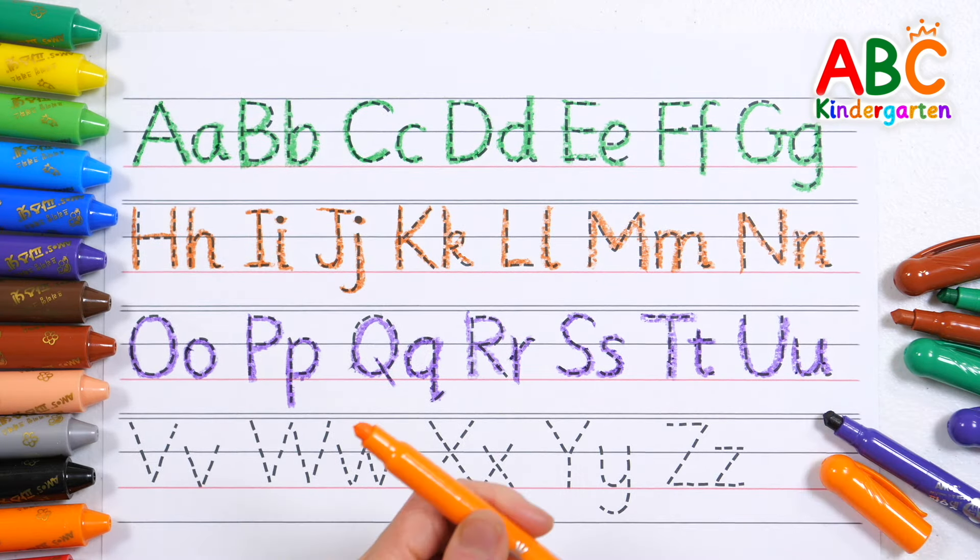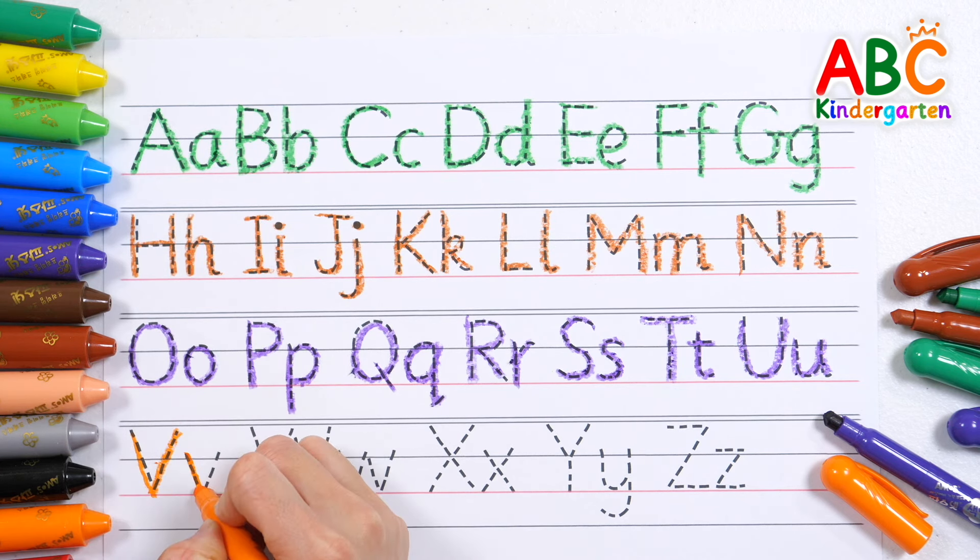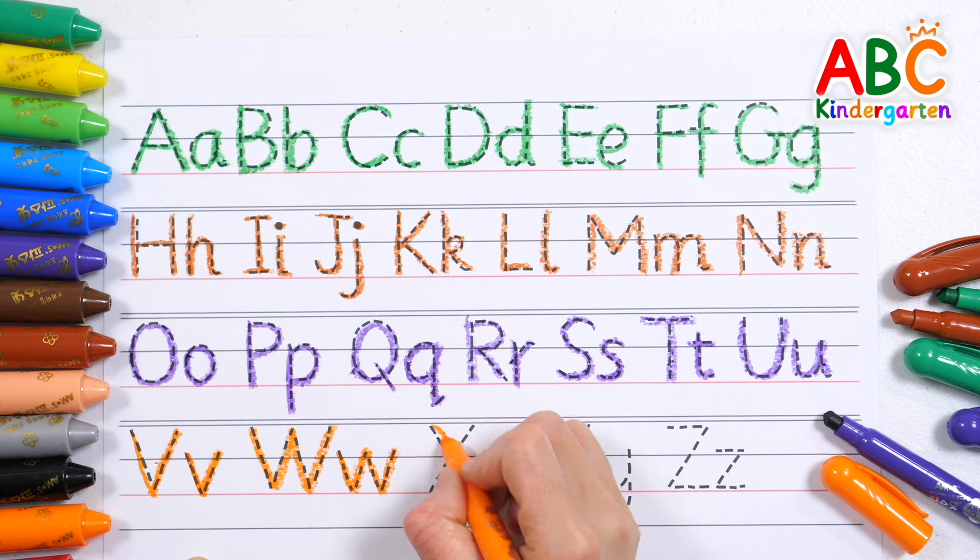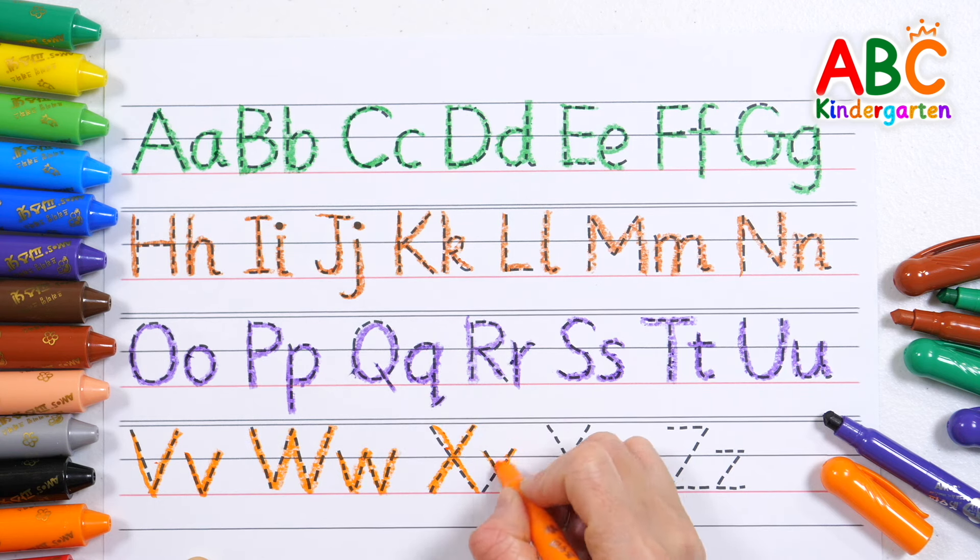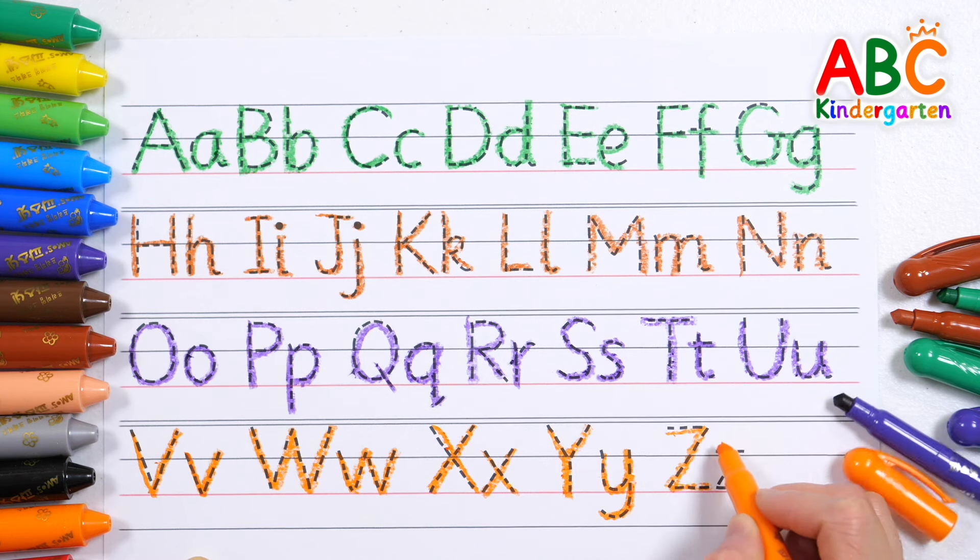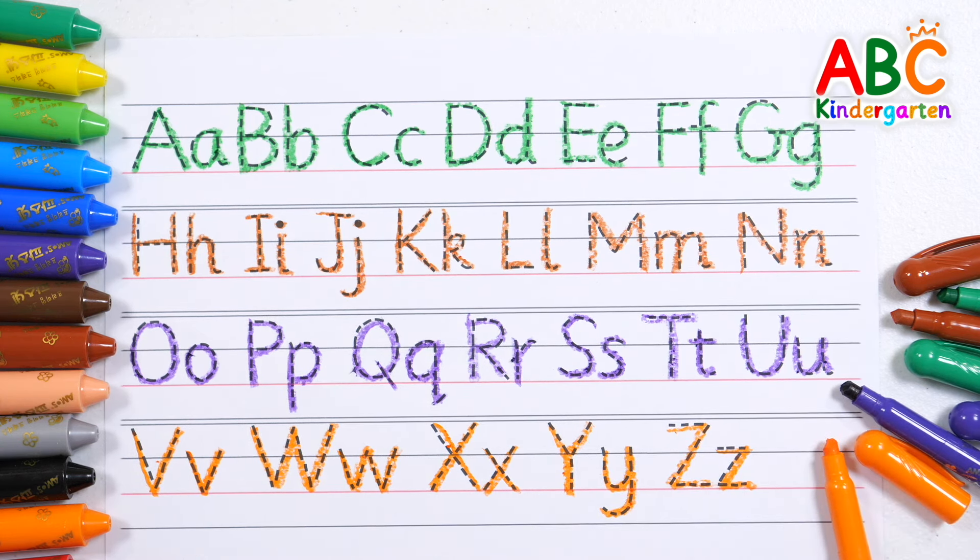This time, trace the dotted line from V to Z in orange and write it down. V, W, X, Y, Z. Very good!